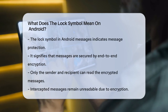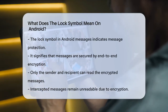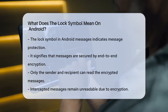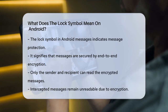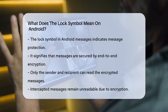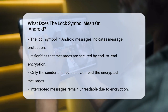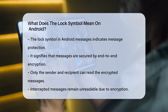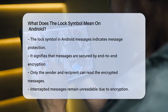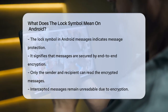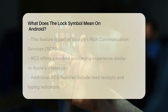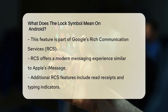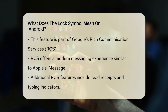When you see a lock symbol next to your messages or the Send button in the Google Messages app, it's a good sign. This little icon indicates that your messages are protected by end-to-end encryption — a security feature that ensures only the sender and the recipient can read the messages. This means that even if someone intercepts your messages, they won't be able to read them because they are encrypted.